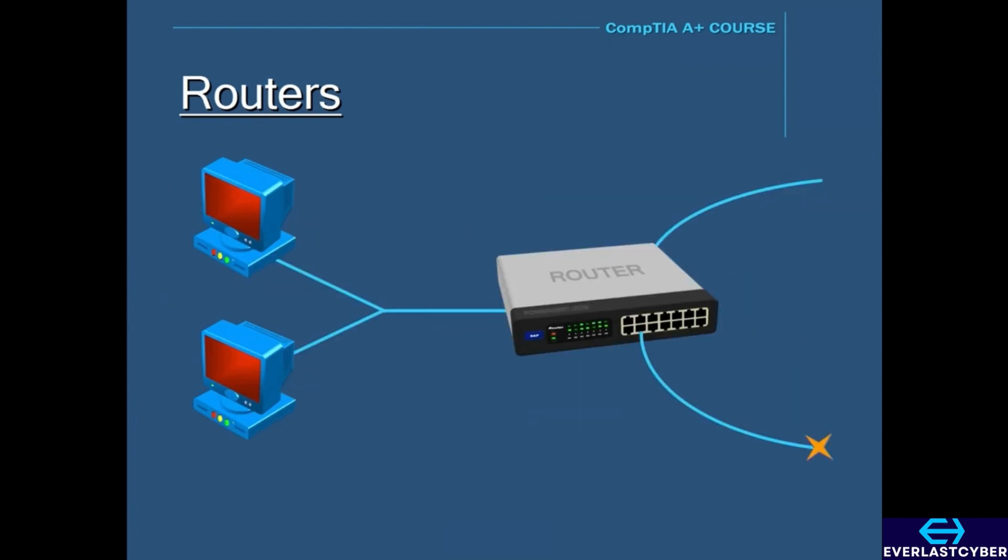A router does exactly what its name implies. A router is a device that routes or forwards data from one network to another based on their IP address. When a data packet is received from the router, the router inspects the packet and determines if the packet was meant for its network or if it's meant for another network.